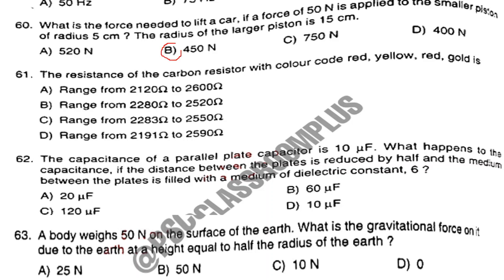Question number 61. The resistance of the carbon resistor with color code red, yellow, red, gold is Option B: range from 2,120 ohm to 2,600 ohm. Question number 62. The capacitance of a parallel plate capacitor is 10 μF. If the distance between the plates is reduced by half and the medium is filled with a dielectric constant of 6, the answer is Option C: 120 microfarad.